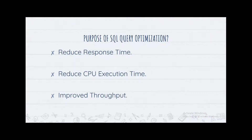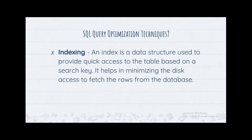Before we move on, we need to look at the purpose of SQL query optimization. There are three main purposes: first, to reduce the response time; second, to reduce the CPU execution time; and third, to improve the throughput. The main idea is that whenever you have a query, it should not run for a long period of time. You reduce the response time by making changes to your query — for example, avoiding unnecessary SELECT statements.